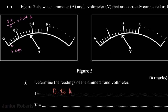We take a similar approach for our voltmeter. From 0 to 1 we have five divisions, so we divide 1 by 5 and get 0.2 volts per division. Counting up from 1: 1.2, 1.4, 1.6, 1.8. Therefore our voltage reading is 1.80 volts.